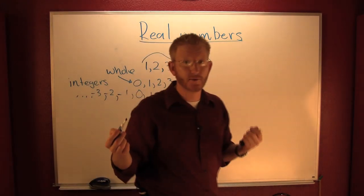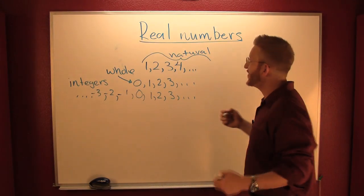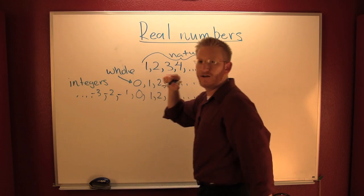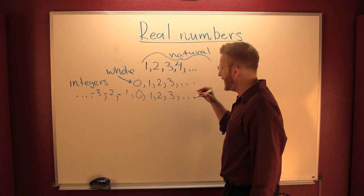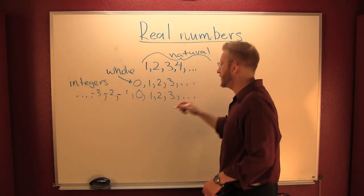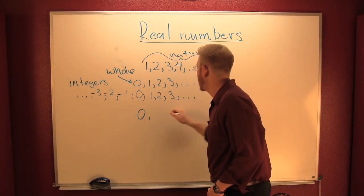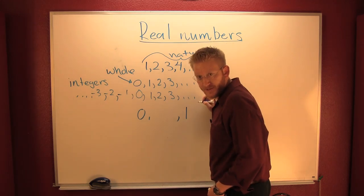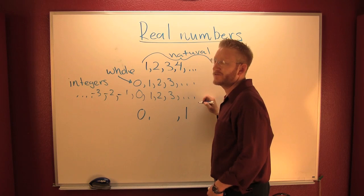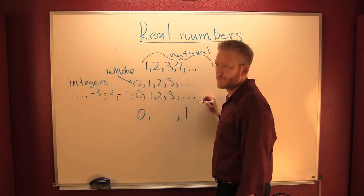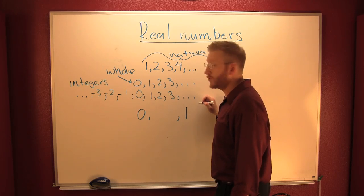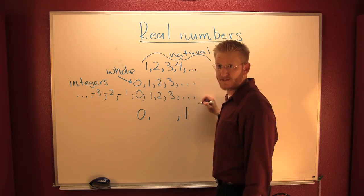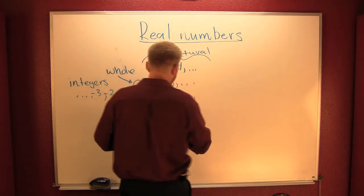Now, are those the only numbers in the entire world? No, man. I need something in between. Are there any numbers in between zero and one? Yeah, like 0.5. Let's not go with the decimal representation — if something can be written as a terminating decimal or a repeating decimal, then it can also be written as a fraction. So I want to throw in some fractions.